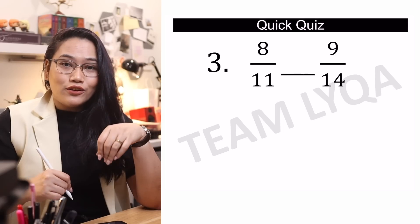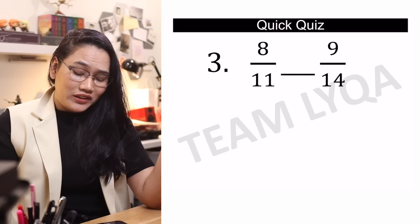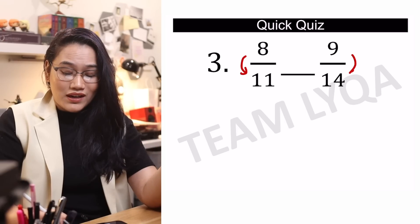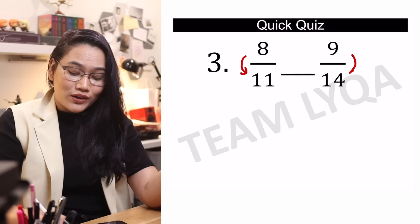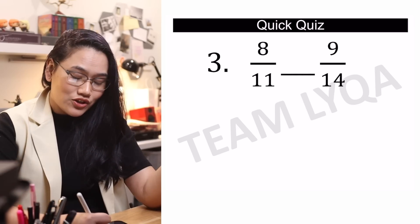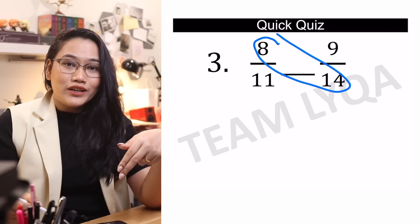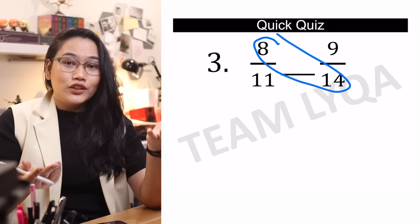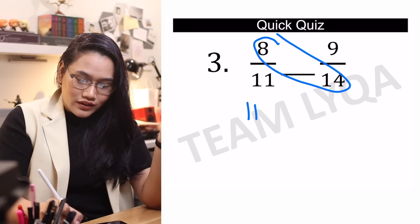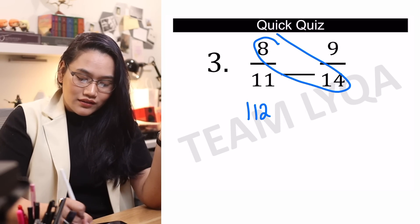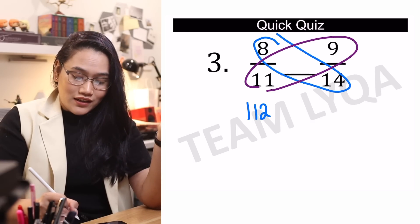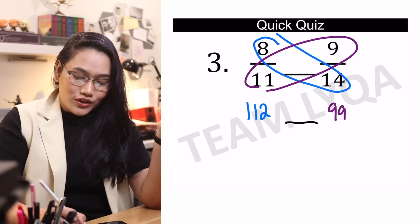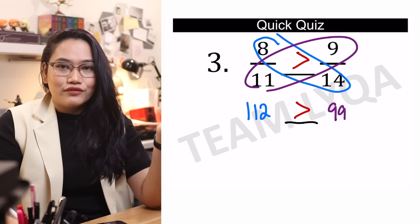Next, we have 8 over 11 and 9 over 14. Hindi magkapareho ng numerator, hindi magkapareho ng denominator, at hindi rin pareho ng difference — kasi ito ay 3, yung kabila ay 5. Which means I don't have a choice but to use cross multiplication. So 8 times 14 is 80 plus 32, which is 112. And here naman, 9 times 11 is 99. Which means yung nasa left side — yung 8 over 11 — ang mas malaking fraction.